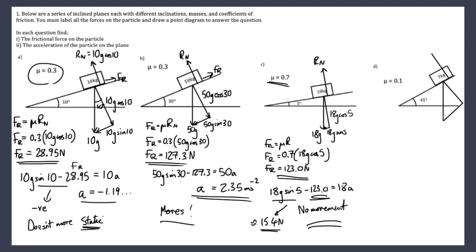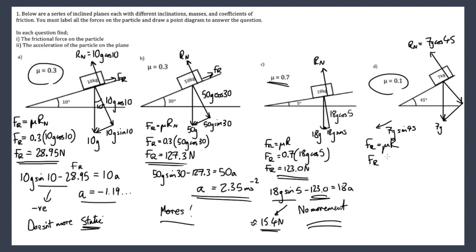Last question in the set: weight is 7g down. Force along the plane is 7g sin45, and our reaction normal equals the force into the plane which is 7g cos45. Coefficient of friction is 0.1, so Fr = 0.1 × 7g cos45. Early prediction: very steep slope and very little friction — definitely going to get movement. The frictional force is quite small, only 4.85 newtons; it'll slow it down a tiny bit but not much.